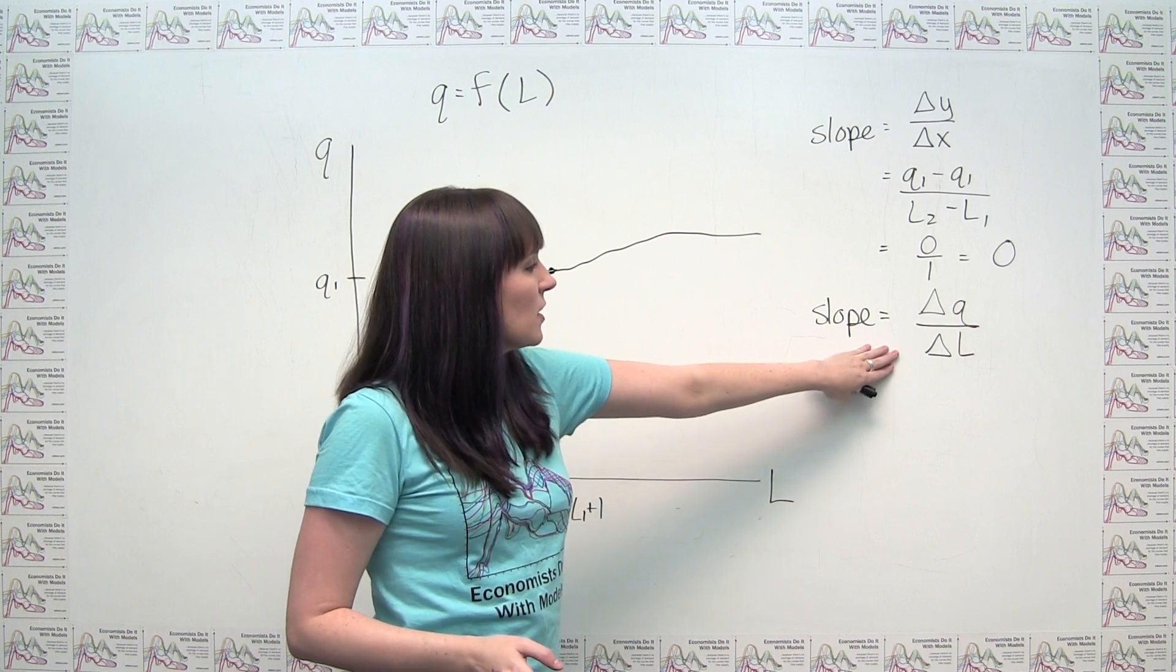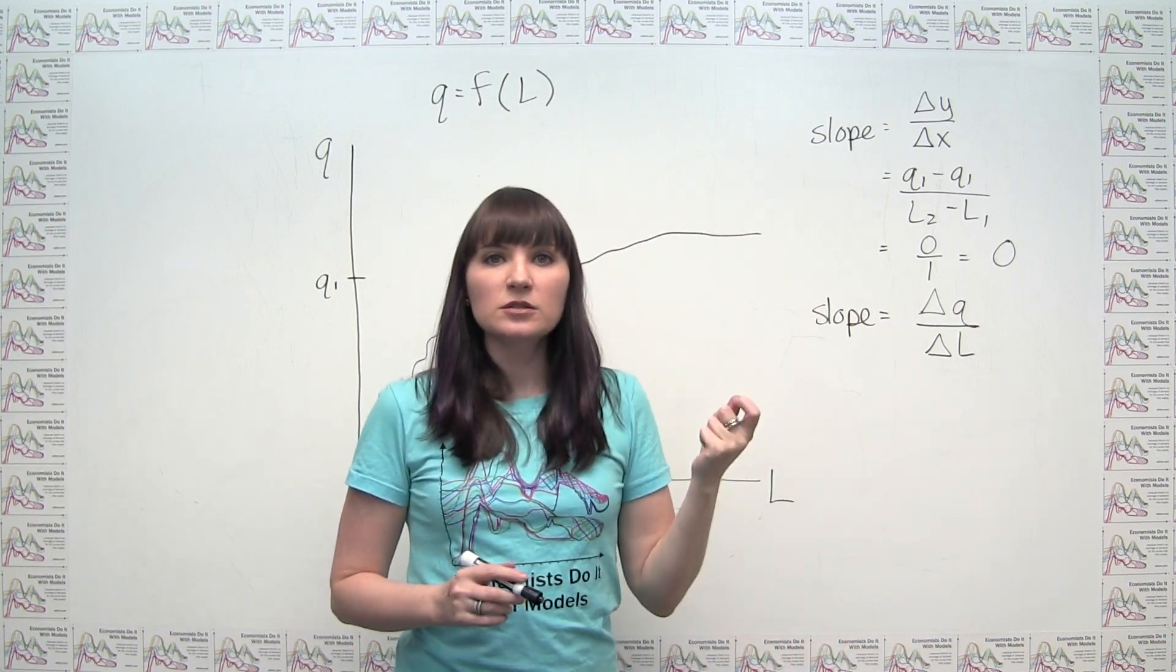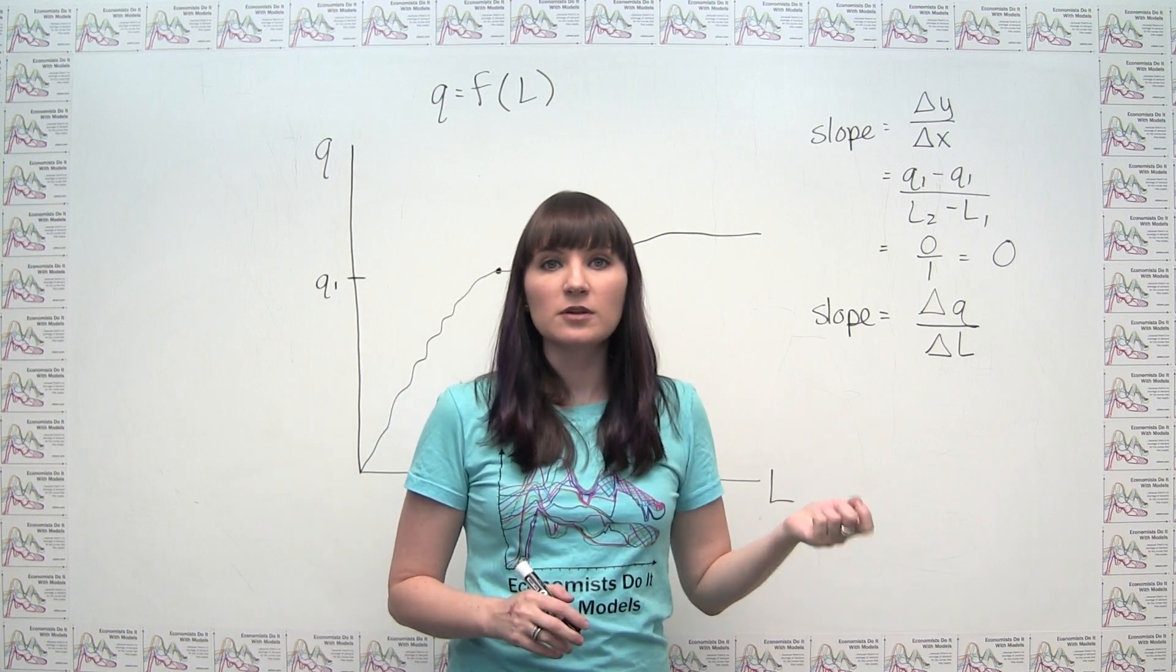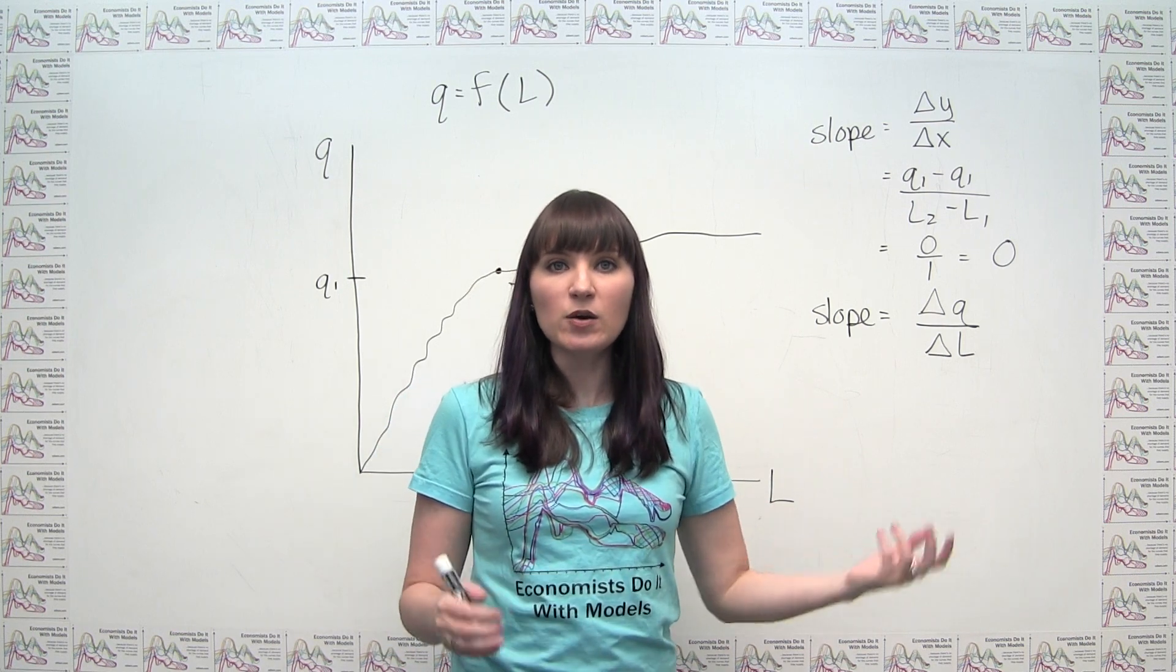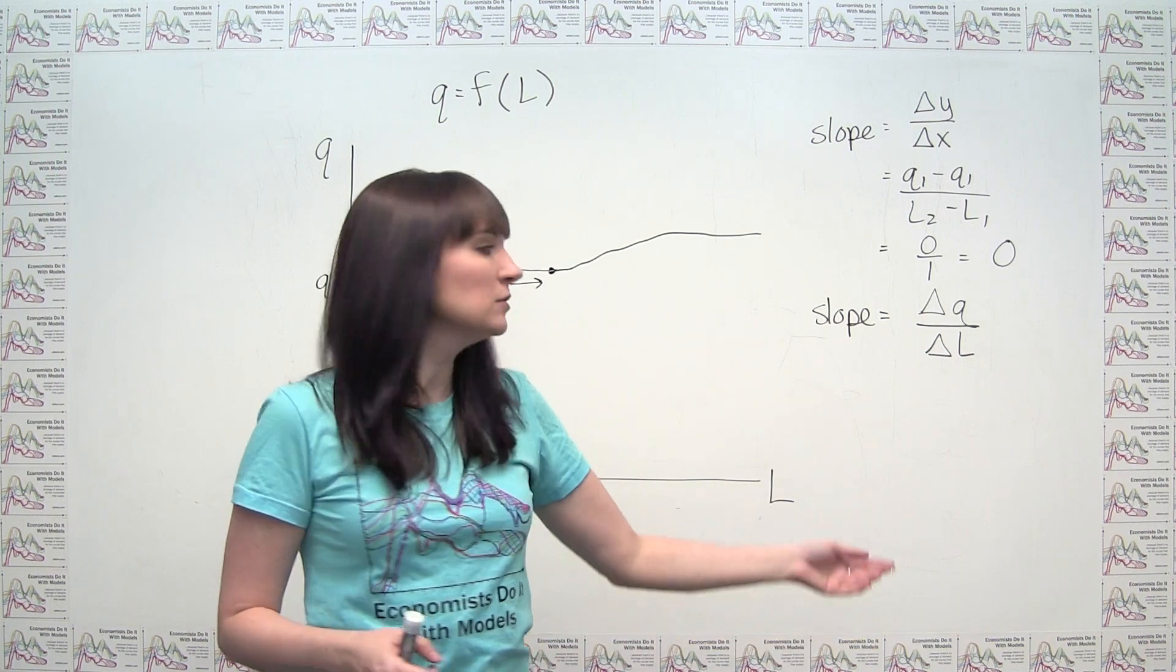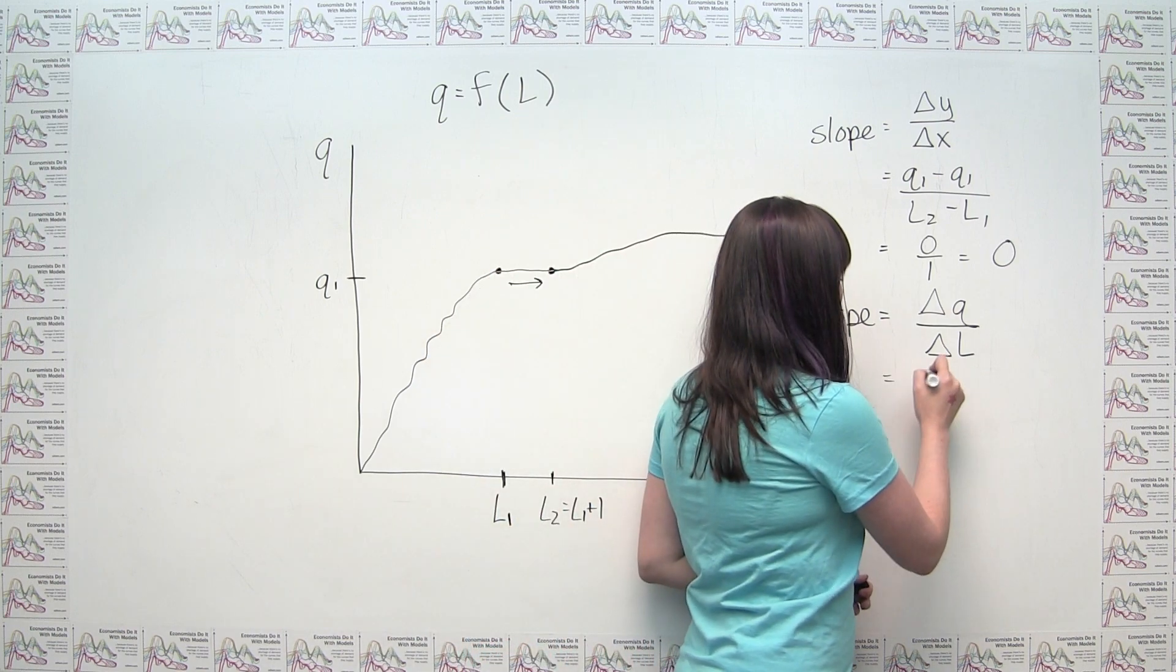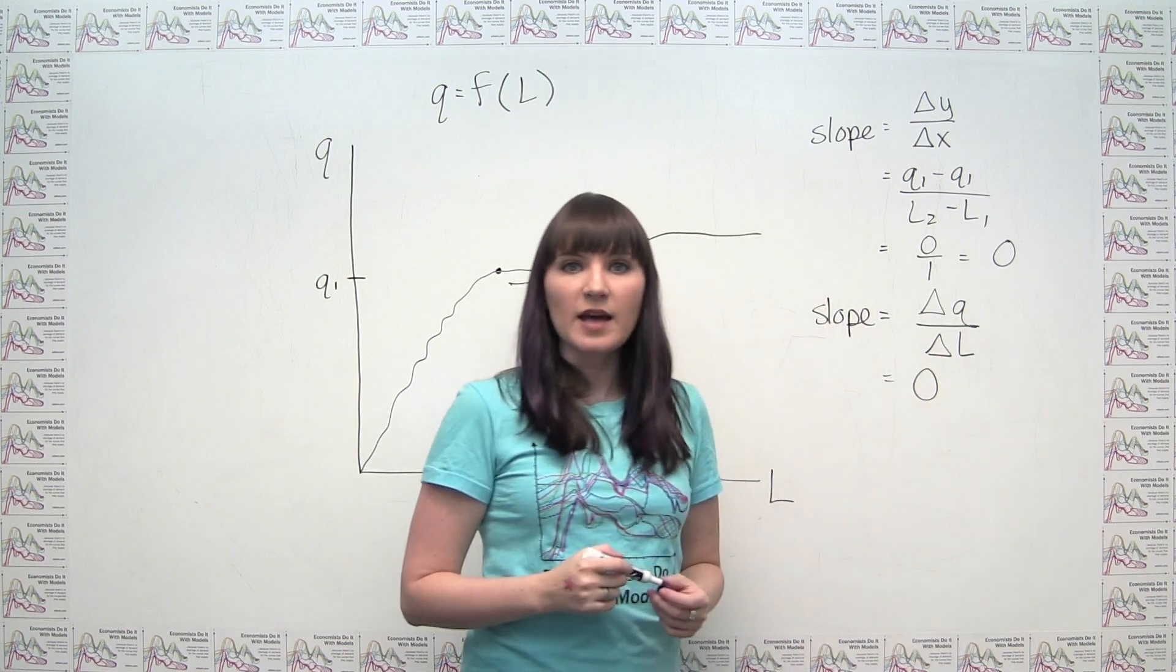And if we saw this, we could see directly, if that additional person, if that additional unit of labor didn't produce any extra output, then by definition, the marginal product of labor is 0. So the slope of the production function, again, must be 0 at that point.